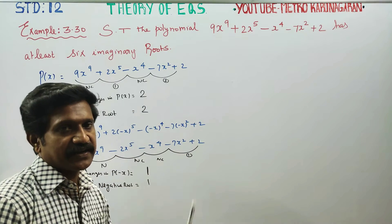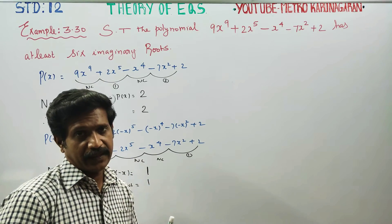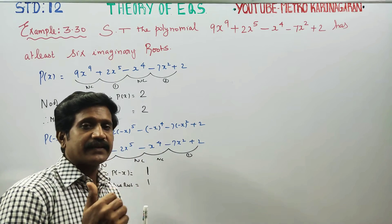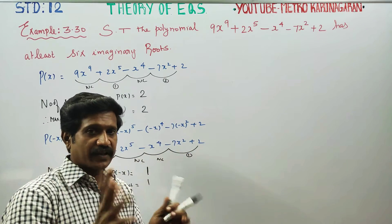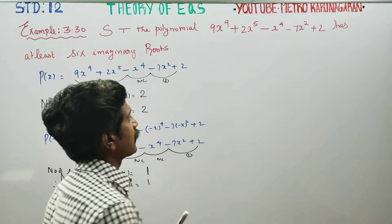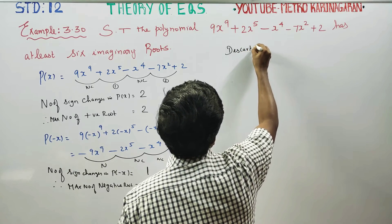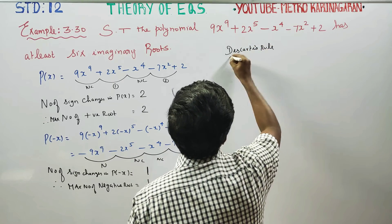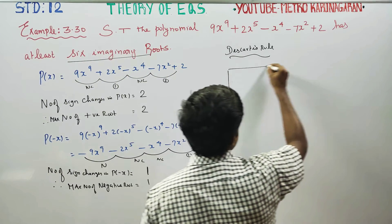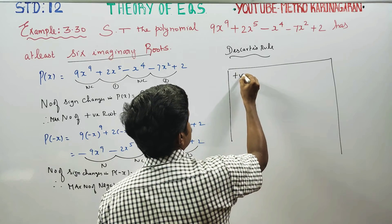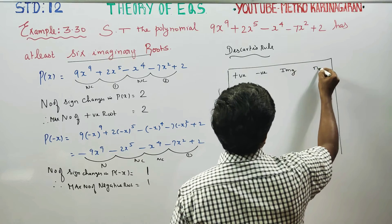This is Descartes' Rule. How many positive roots? How many negative roots? How many imaginary roots? Let's apply the rule. At least six imaginary roots. This is my positive root column, this is my negative root column, this is my imaginary root column, and this is my total roots column.